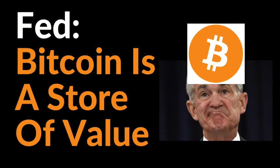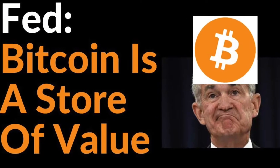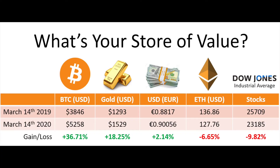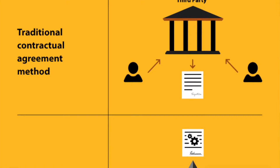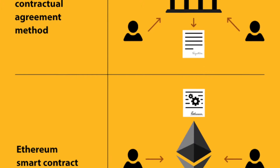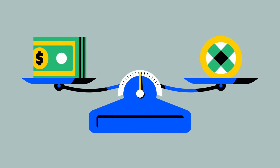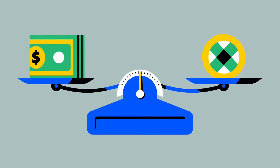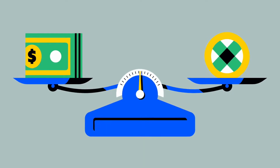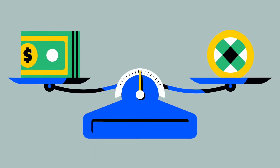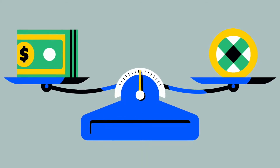Different blockchains have different roles, and the most popular ones are Bitcoin, known for its role as a store of value; Ethereum, known as a smart contract blockchain; and different stablecoins that are pegged to their respective fiat currency, and so on.